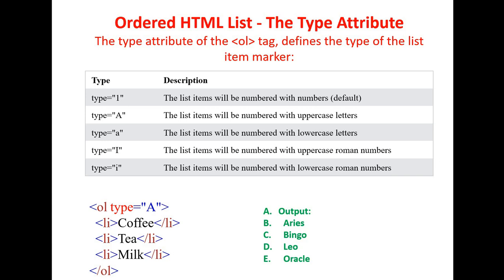Next we will see the type attribute used in the ordered list. The type attribute is used in the OL tag. Type equal to 1 means items are numbered with numbers — this is the default. Type equal to A means items are numbered with uppercase letters. Type equal to lowercase a means items are numbered with lowercase letters. Type equal to I means uppercase Roman numerals, and type equal to lowercase i means lowercase Roman numerals. In the example, OL is the tag, type is the attribute, equal to is the sign, and A is the value, so list items are represented as uppercase letters.